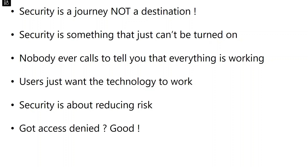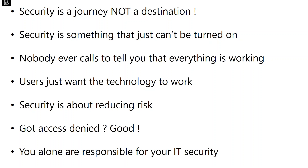When we start turning security up a notch, we'll get complaints from users about access being denied — in reality, that's a good thing, it means the security is working. A good example is email forwarding rules, which are on by default. Best practice is to disable that for the whole tenant and have users request forwarding rules on a one-by-one basis. Think of security like a firewall: everything is blocked initially, and any changes are audited, tracked, and logged. IT security is the responsibility of the IT provider, and it falls to the business to manage and maintain their own security — you can't abdicate it.